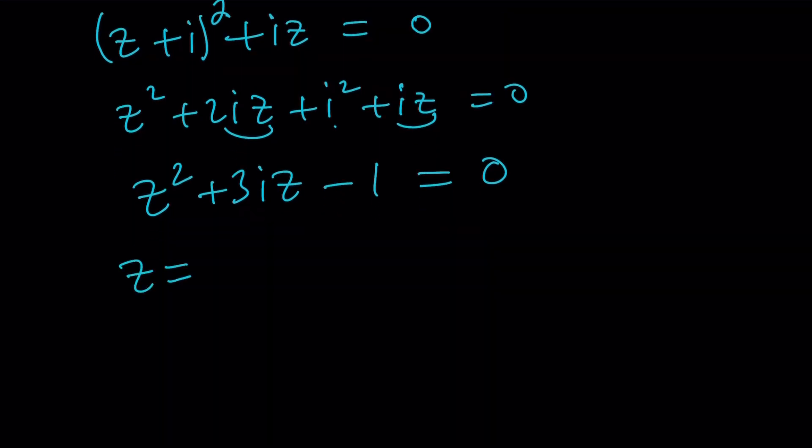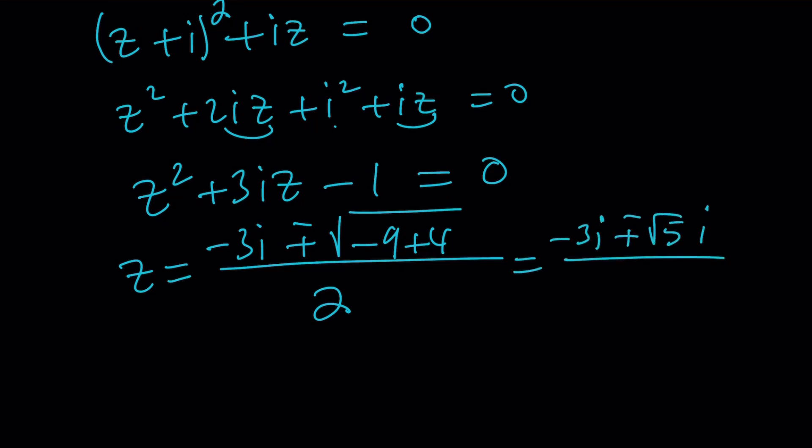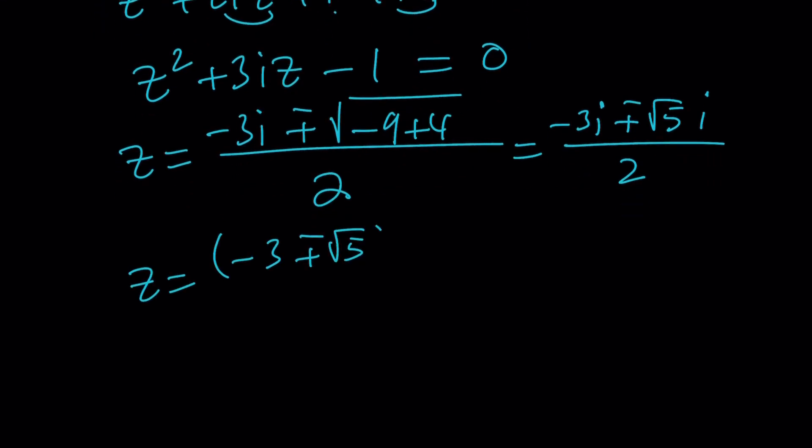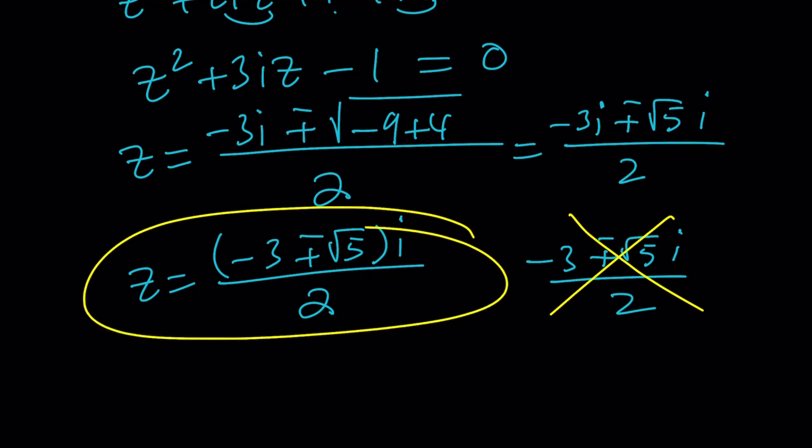Let's expand this: z squared plus 2iz plus i squared plus iz equals zero. i squared is negative one. 2iz and iz are like terms, so we can add them up: z squared plus 3iz minus 1 equals 0. This is going to give us some solutions. This is quadratic, let's solve it. z equals negative b, which is negative 3i, plus minus the square root of b squared, which is negative 9, minus 4ac, which is plus 4, giving us negative 5. The square root of negative 5 is square root of 5i. So we can factor out an i and write this as negative 3 plus minus the square root of 5, all multiplied by i, divided by 2.